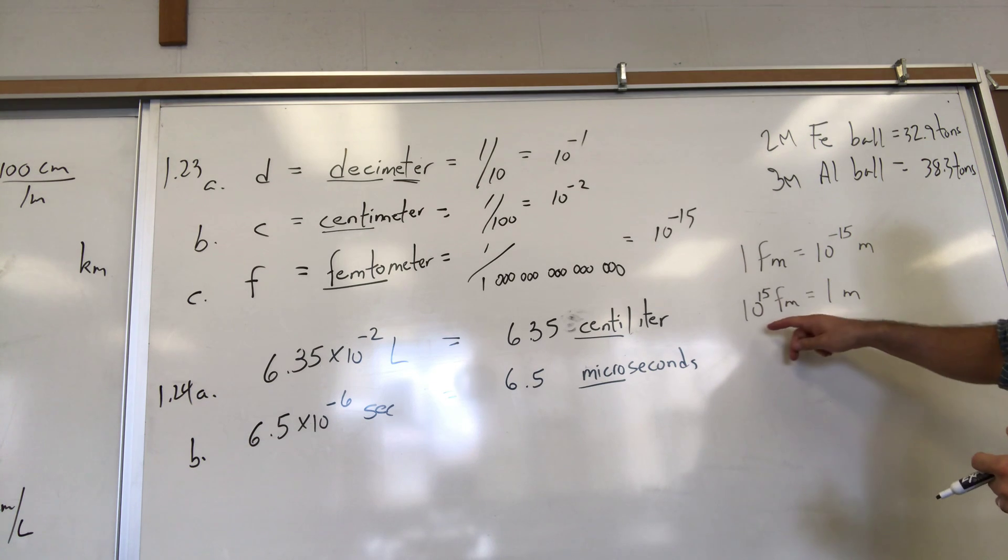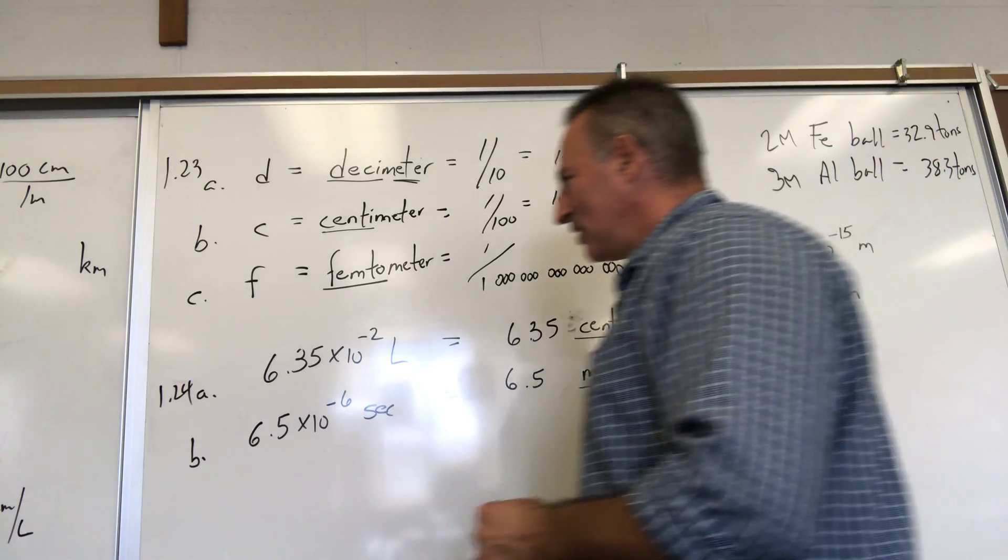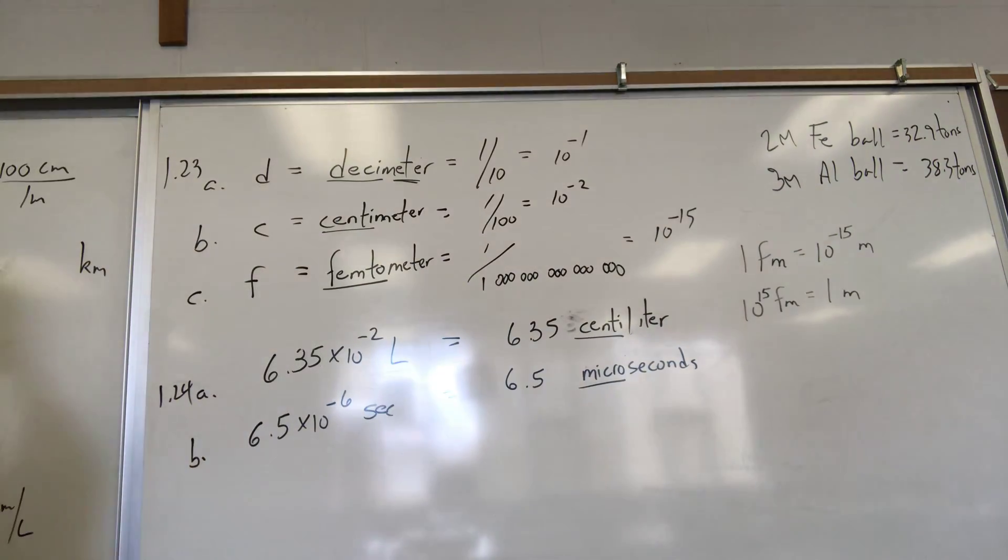You notice when you use the smaller measurement, the number of smaller measurements necessary to get the bigger measurement is the reciprocal of whatever number of the bigger measurement it takes to equal the smaller measurement. Just take the reciprocal to get the correct number.